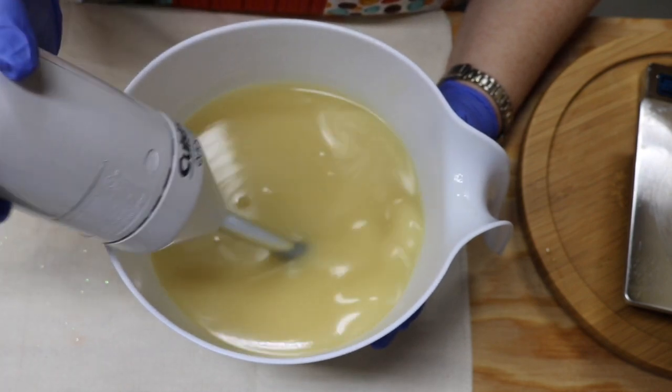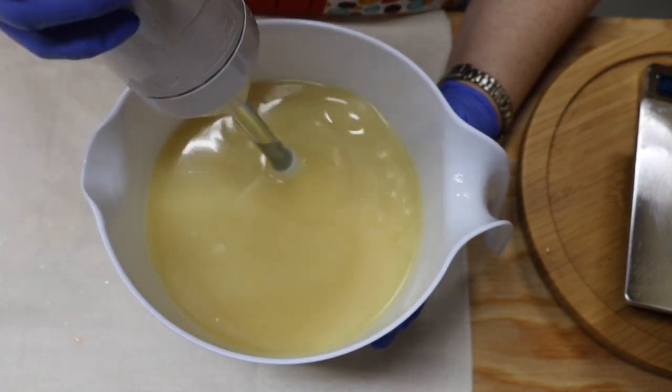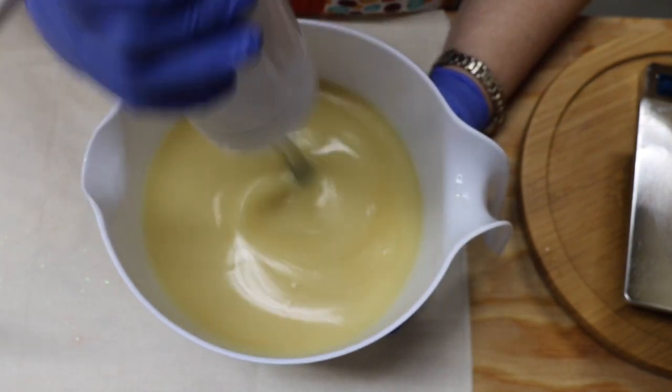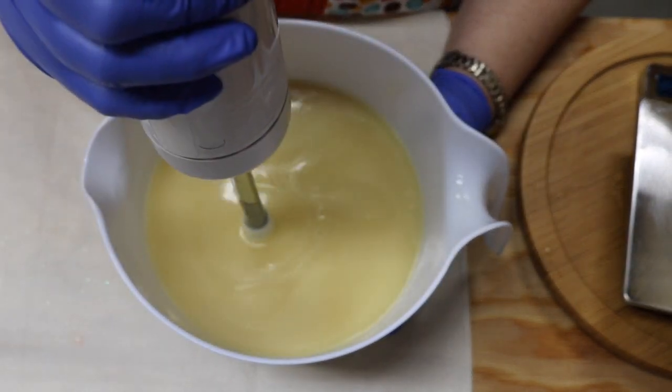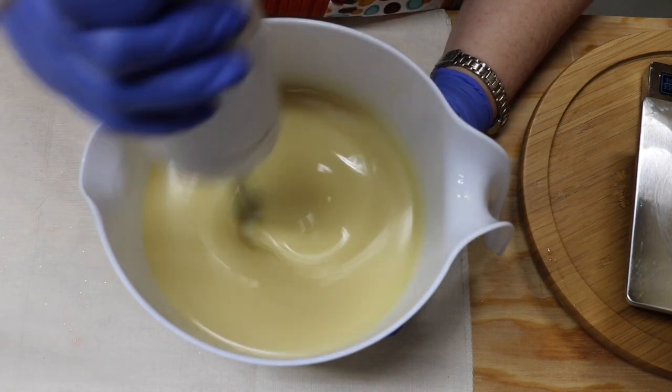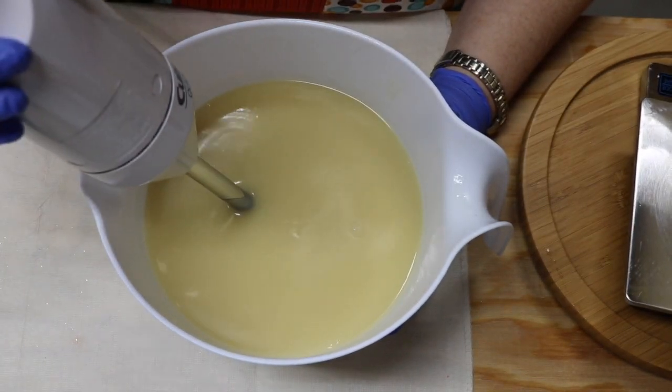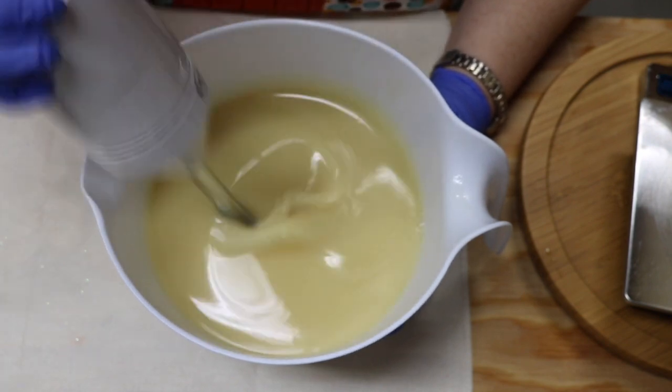And the best way to tell if your soap has come to trace is if there's no more oil slicks on top. You don't see a separation of the oils so that you can tell that you're at trace or you're at least got it mixed up really well. So that's what is happening here.